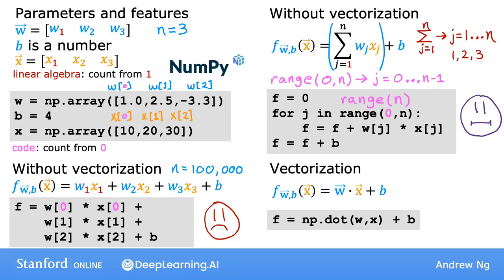This NumPy dot function is a vectorized implementation of the dot product operation between two vectors, and especially when n is large this will run much faster than the two previous code examples.